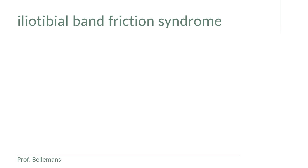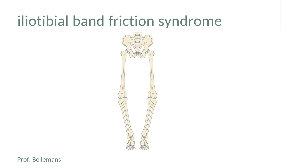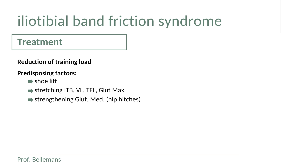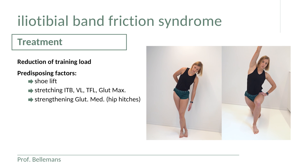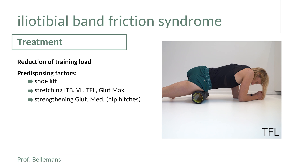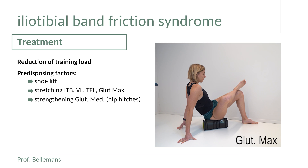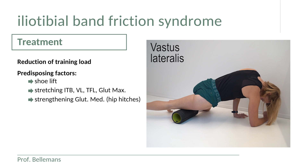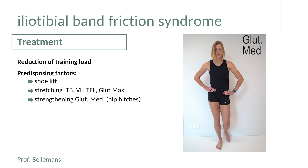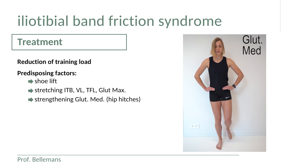Varus deformity can be addressed with specific insoles that create a valgus effect at the knee, reducing ITB tension. You should also stretch the ITB and reduce tension in the muscles that pull on it — the vastus lateralis, tensor fascia latae, and gluteus maximus — through specific stretches or releases using a hard ball or foam roller, or if needed by dry needling. Additionally, strengthening the gluteus medius, a short hip abductor, can take some of the load off the tensor fascia latae and further reduce forces on the ITB.